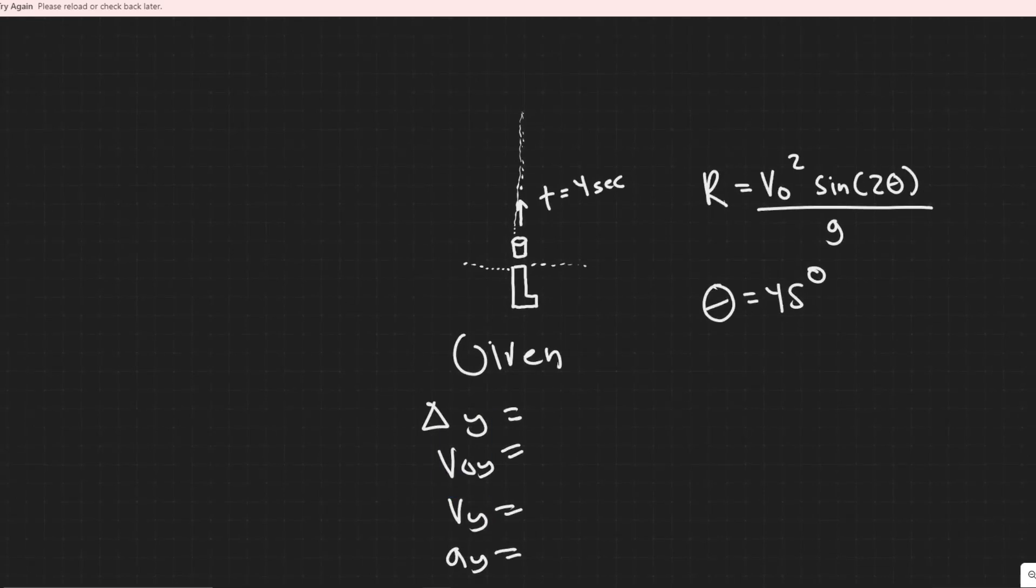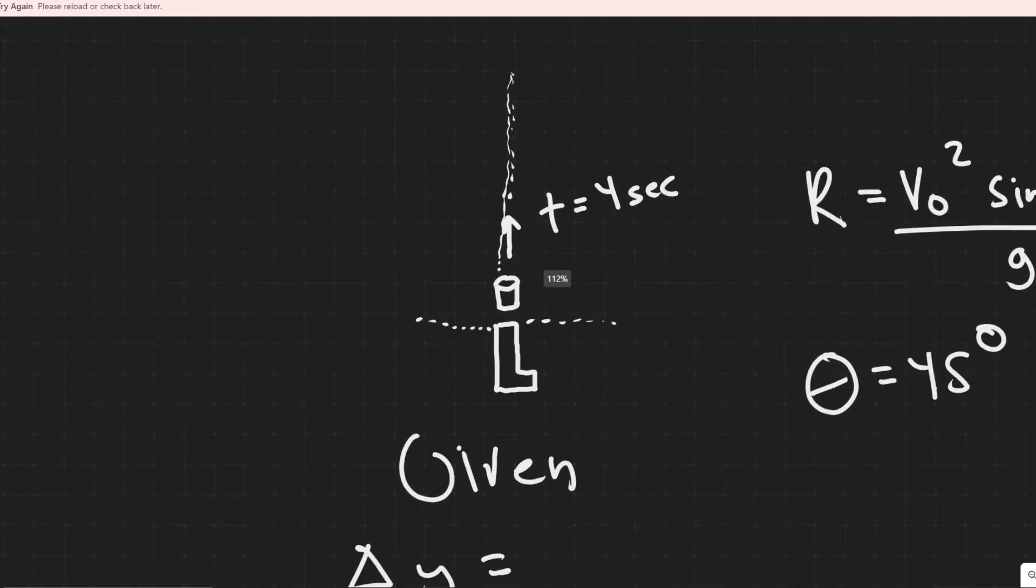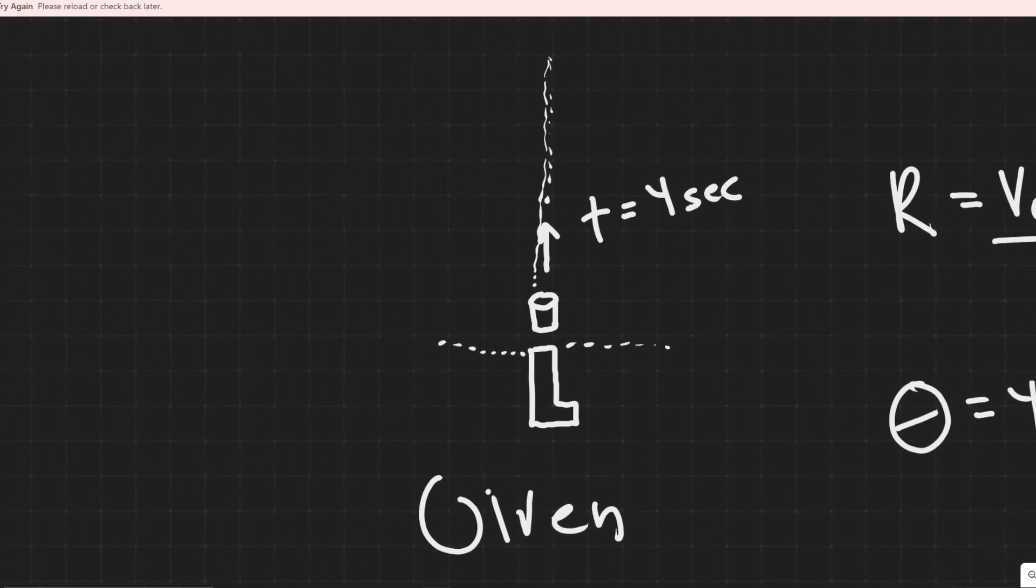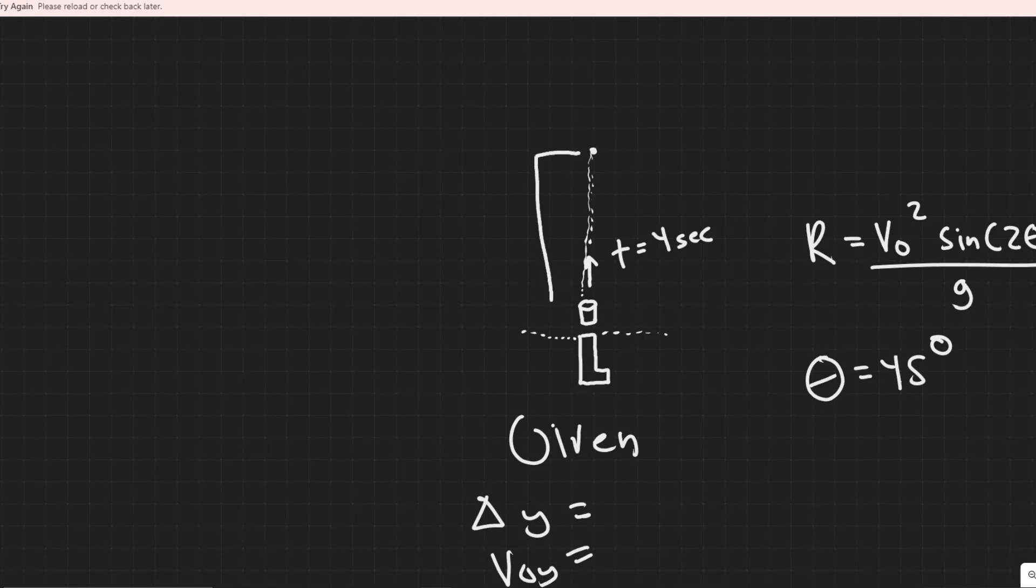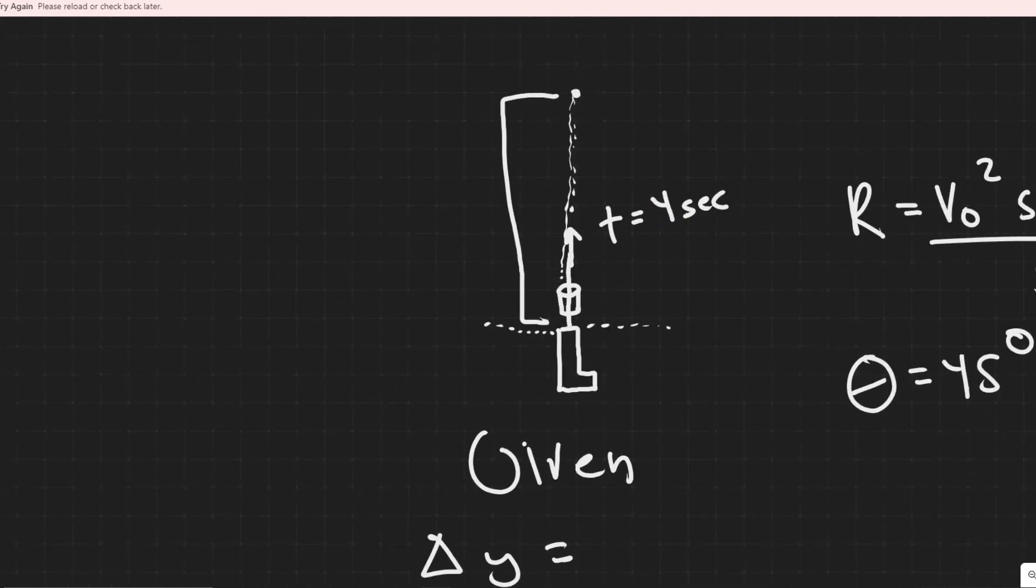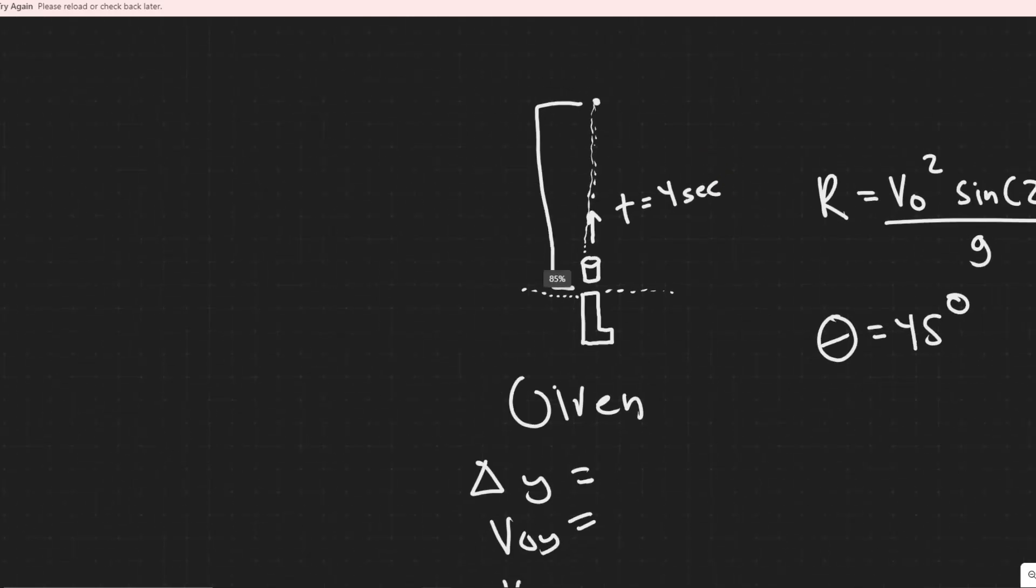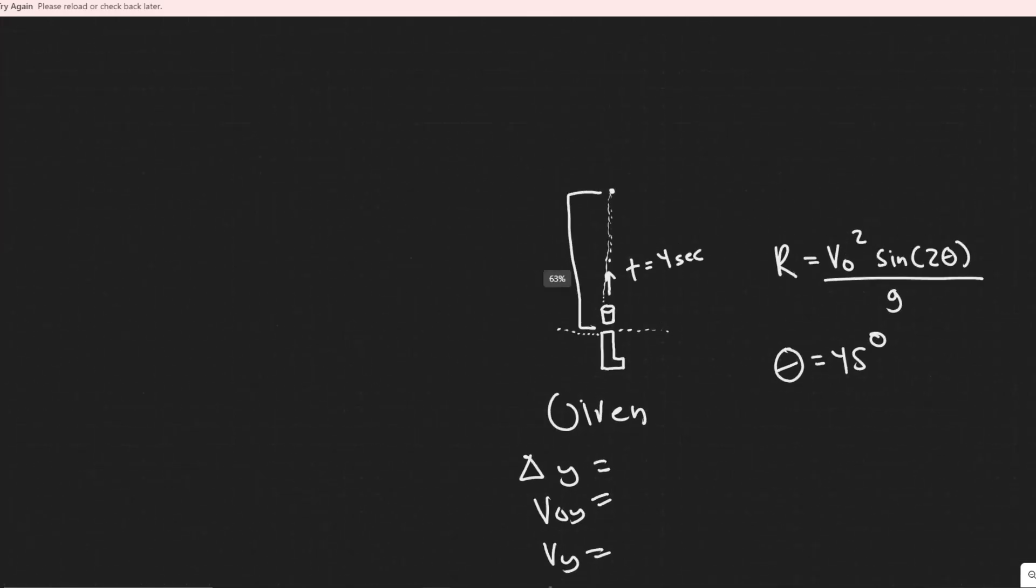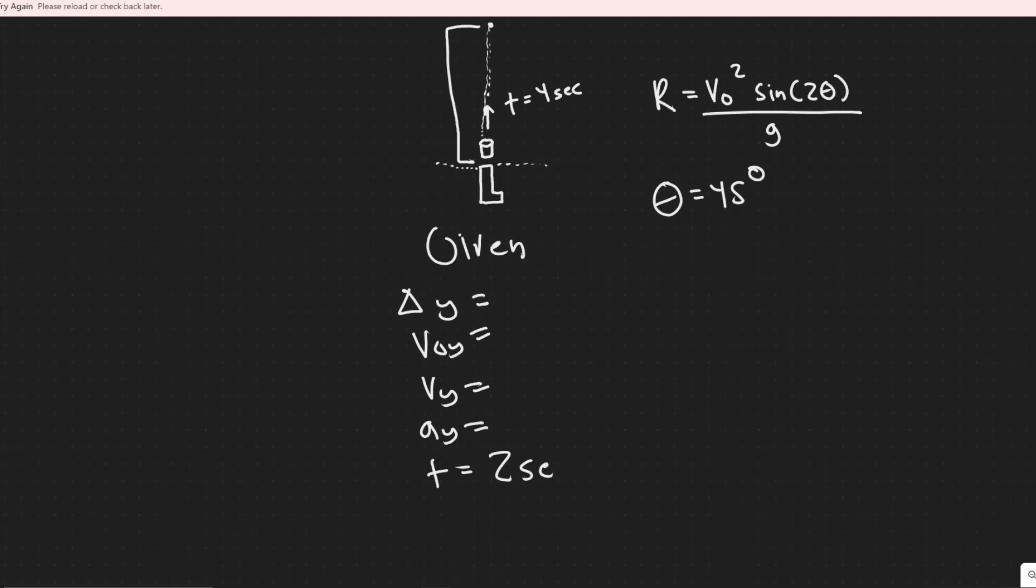Whenever you do kinematics, you always choose an interval to work along. The interval that I'm going to choose is basically from the point it's fired to its maximum point. Another thing you should know, or a trick, is if they tell you the time it takes for it to go up to a certain point and down, half the time is how long it takes to go up, and half the time is how long it takes to go down. We know the time it's going to take for this interval from top to bottom is 2 seconds, because the total time is 4, and then dividing that by 2 is just 2 seconds. So we know t.